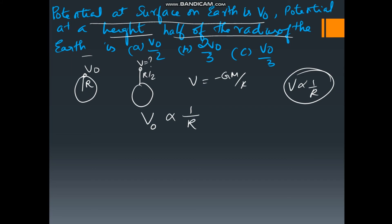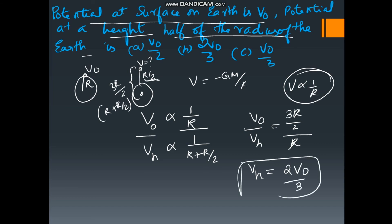So at surface, it is V naught and it is inversely proportional to R. At height h, which is equal to R by 2, from center, if we take the distance is 3R by 2, since it is R plus R by 2. So potential at height h is inversely proportional to R plus R by 2. If I divide, V0 by Vh is equal to 3R by 2 divided by R. So at Vh, the potential comes out to be 2 V0 by 3. This is the potential at height h.